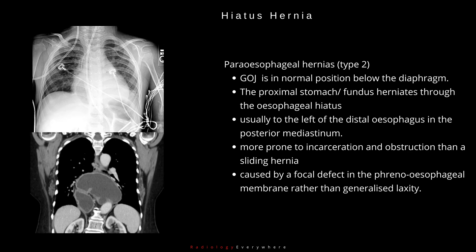Paraesophageal hernias, or Type 2: the gastroesophageal junction is in its normal position below the diaphragm, while the proximal stomach or gastric fundus herniates through the esophageal hiatus. It is caused by a focal defect in the phrenoesophageal membrane rather than generalized laxity, usually to the left of the distal esophagus in the posterior mediastinum. It is more prone to incarceration and obstruction than a sliding hernia. The chief concern is for progression to gastric volvulus, with its concomitant risks of obstruction and infarction. Symptoms of gastroesophageal reflux may also be present.